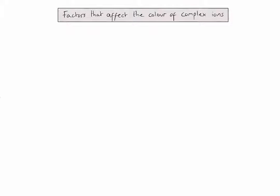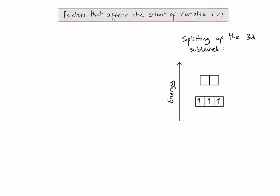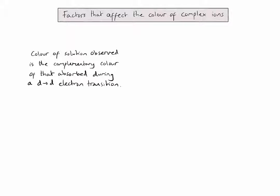Before we consider the factors that affect the colour of complex ions, let's quickly remind ourselves of why they are coloured in the first place. Here is an orbital box diagram of the splitting of the 3D sublevel into the only example we need to know in IB chemistry, where two of the orbitals are slightly higher in energy than the other three. Because a transition metal ion will always have an incomplete D sublevel, there will always be space allowing an electron to absorb energy and jump up to one of the higher 3D orbitals. Because this process absorbs a specific wavelength of visible light, the colour of the solution that we observe will be the complementary colour to that wavelength. Remember that we can identify the complementary colour using the colour wheel found in the data booklet.